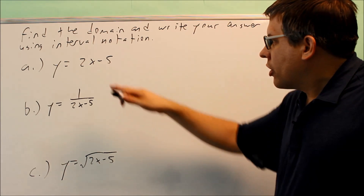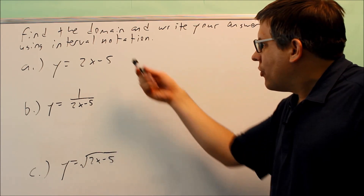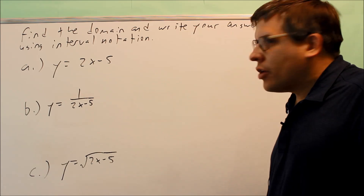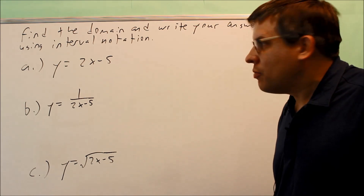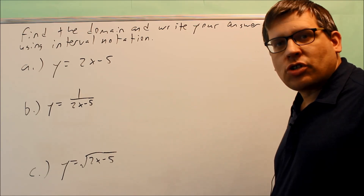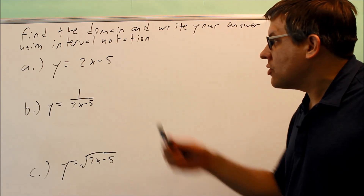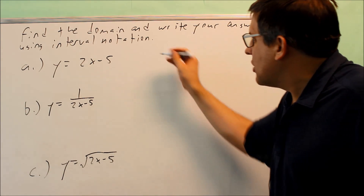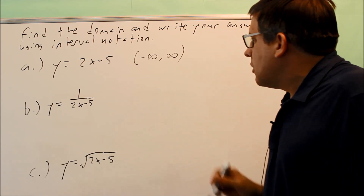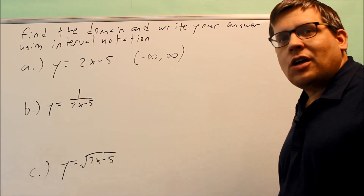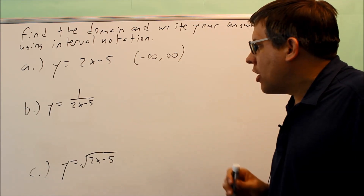Looking at the first example, y equals 2x minus 5. There's no chance of dividing by 0 because there's no fraction, and there's no chance of taking a square root of a negative number. Because neither of those are present, any number is okay. The answer will be negative infinity to positive infinity.